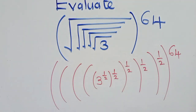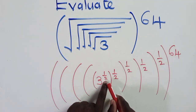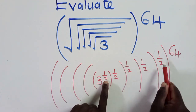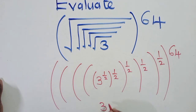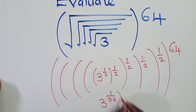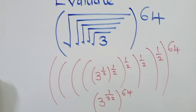So next, by the laws of indices, we multiply this times this times this times this times this. So we're going to get 3 to the power 1 over 32, and then to the power 64.